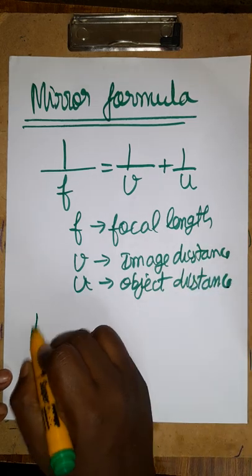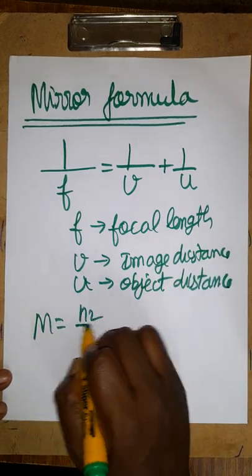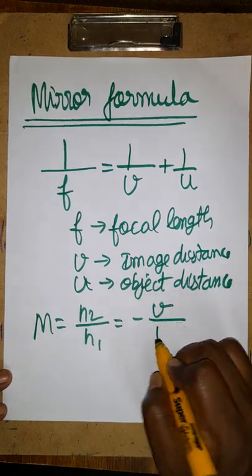The next one, magnification m is equal to h2 divided by h1, otherwise minus v divided by u.